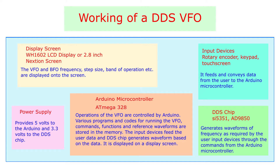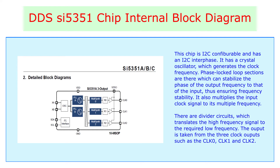Working of a DDS VFO. The operation is controlled by the Arduino Atmega328 microcontroller. Various programs and codes for running the VFO are written in the Arduino Nano. Necessary commands, reference waveforms and various functions are also stored in memory. Input devices such as the rotary encoder or keypad are used to feed data such as the VFO frequency, BFO frequency, step size and other functions to the microcontroller. A crystal oscillator frequency reference clock operating at fixed crystal frequencies of 25 or 27 MHz is used to create identical waveforms. A phase-locked loop section helps to stabilize the output frequency, which is multiplied and then divided by a specific number to get the required output frequency.